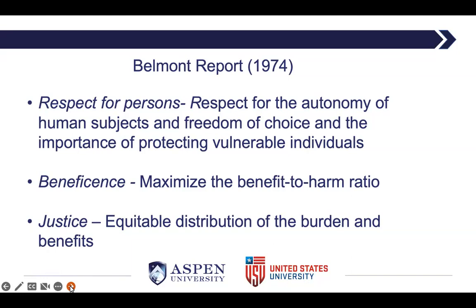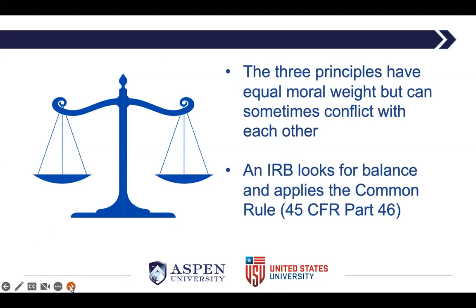The Belmont Report summarizes three ethical principles that should guide human research: respect for persons, beneficence, and justice. The Belmont Report led to the Common Rule — the Federal Policy for the Protection of Human Subjects — adopted by a number of federal agencies in 1991. The Common Rule is essentially the baseline standard of ethics by which any government-funded research in the U.S. is held. Nearly all U.S. academic institutions hold their researchers to the Common Rule regardless of funding source.